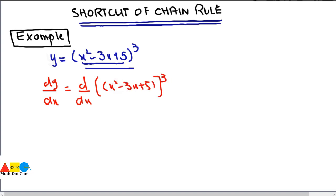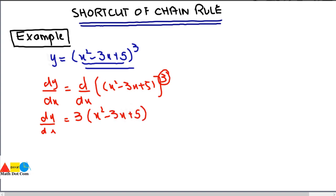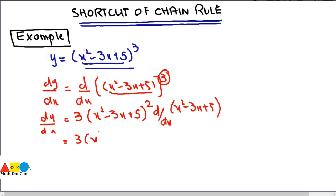The shortcut method: first, move the power to the front just as in the power rule, bringing the 3 out front. Then write the function as it is and subtract 1 from the power — 3 minus 1 gives 2. So we have 3(x² - 3x + 5)². Next, take the derivative of the inner function x² - 3x + 5.